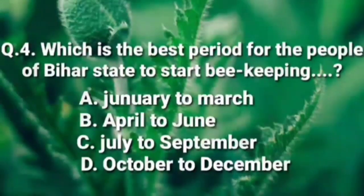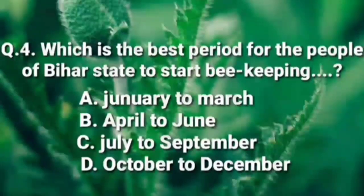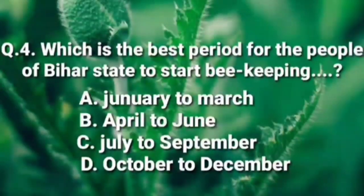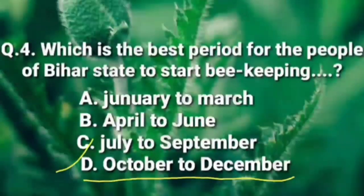Which is the best period for the people of Bihar state to start beekeeping? Every state has its own beekeeping culture. Option A is January to March, option B is April to June, option C is July to September, option D is October to December. The correct answer is option D, October to December, which is the best beekeeping period in Bihar.